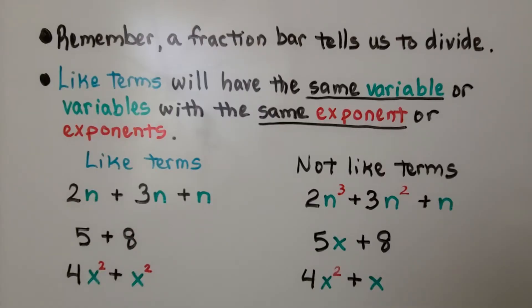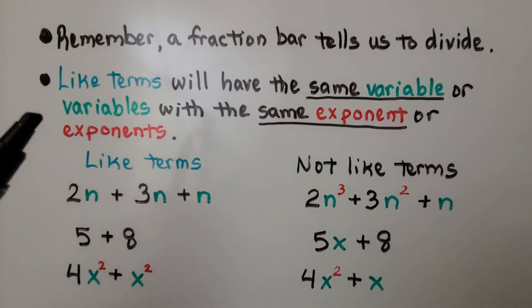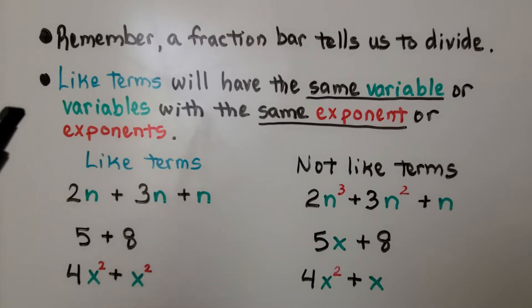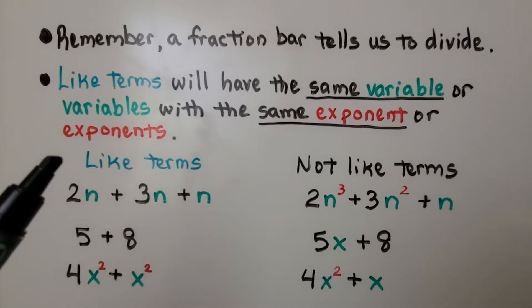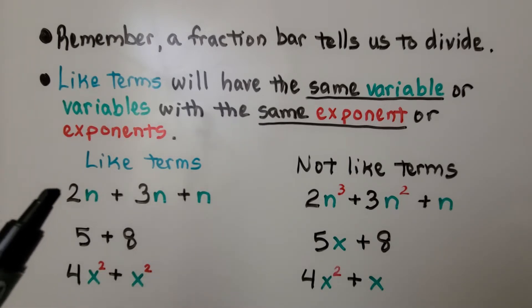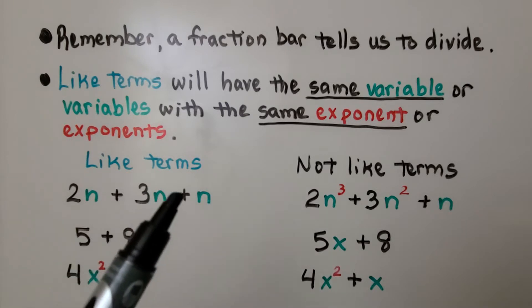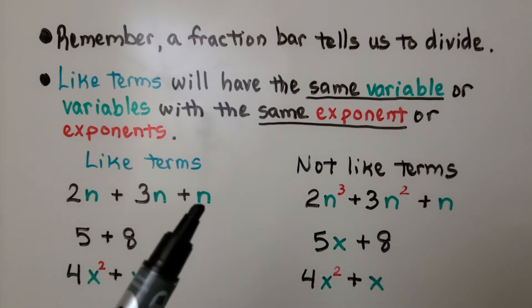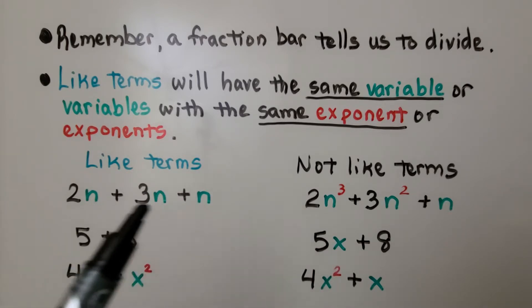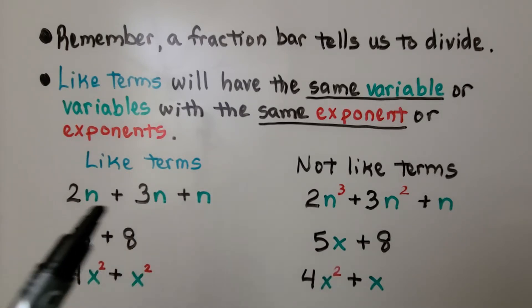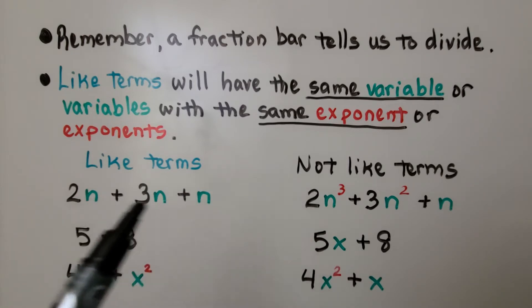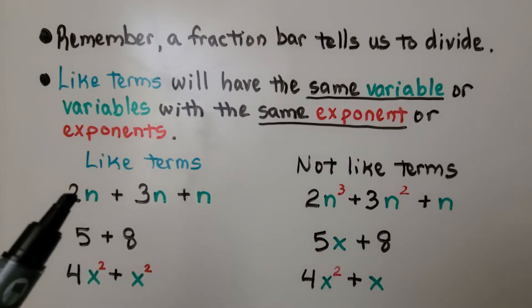Remember, a fraction bar tells us to divide. And remember, like terms will have the same variable or variables with the same exponent or exponents. So here are some like terms. We have 2n plus 3n plus n. We have the same variable and they don't have an exponent. These are like terms, all three of these.